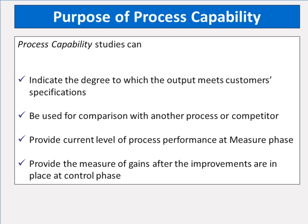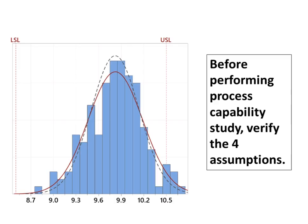Process capability can provide the current level of process performance at the measure phase, and provide the measure of gains after improvements are in place at the control phase. Before performing a process capability study, verify the four assumptions.